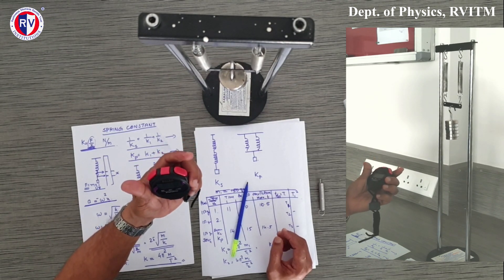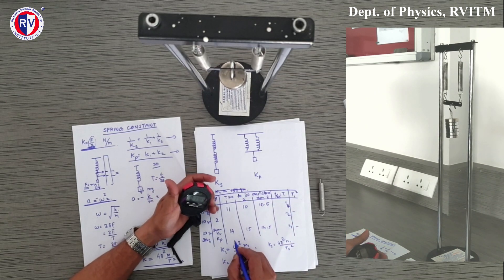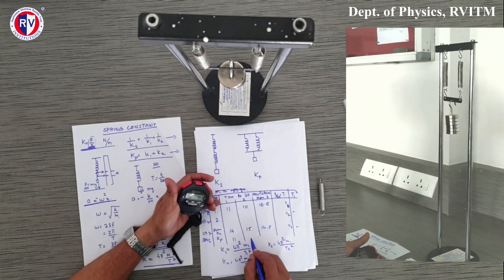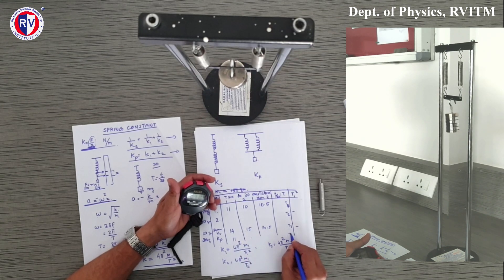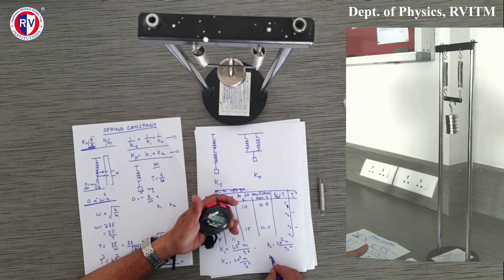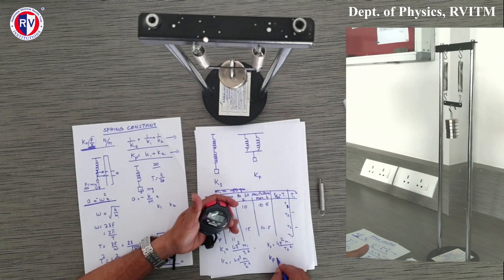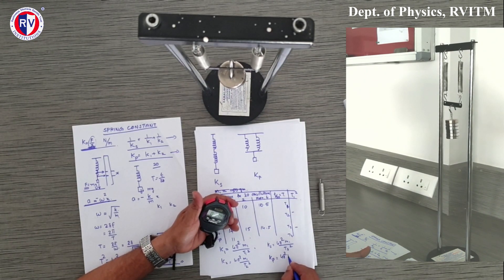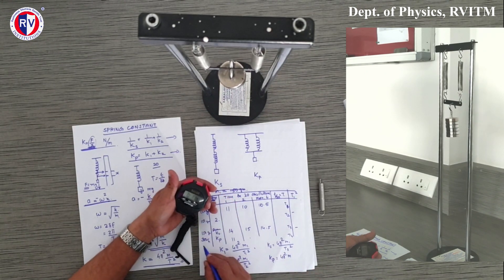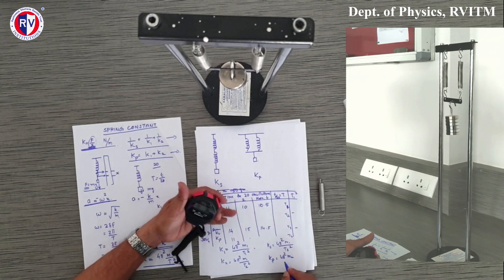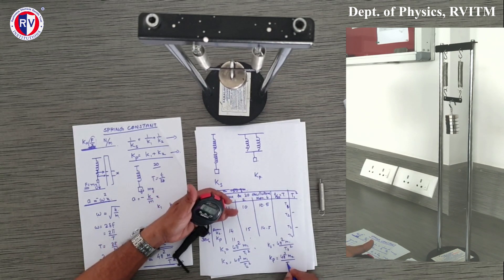I reset the stop clock. For the parallel combination with 300 grams, I get 11.07 seconds for 20 oscillations — approximately 11 seconds. I repeat the trial to find T4, then compute the parallel spring constant kp = 4π²M2 / T4².